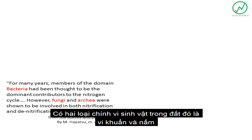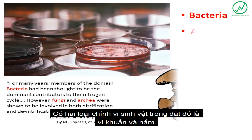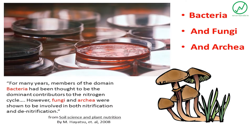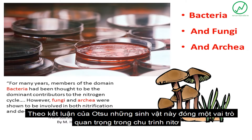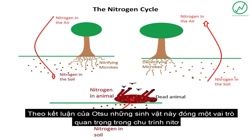The main two types of microbes in the soil are bacteria and fungi, as concluded by M. Hayatsu. Both of these organisms play a key role in the nitrogen cycle.